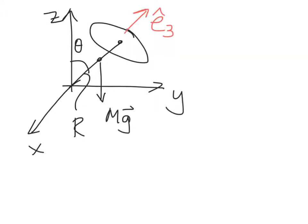Here's our simplified top that we're going to consider. We've got our x, y, and z coordinate axes. Imagine that our top is spinning primarily about an axis E3 hat, which is fixed to the body of the top. The top is going to precess around, and that means that this E3 hat vector is going to move as the top precesses.